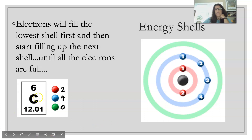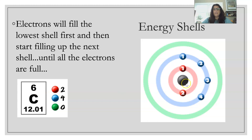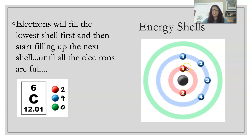Let's look at carbon. Carbon has six protons, so we know it's going to have six electrons because it's neutral. The first shell holds a maximum of two electrons, so two of its six electrons go into the first shell. We still have four more electrons, so they go into the second shell, which can hold up to eight. We only have four left, so they all reside within that second shell.